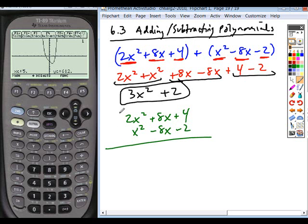3x², the 8x cancel, plus 2. And again, it winds up with the same answer. It doesn't matter which form you use, but often it can be easier to do it this way.